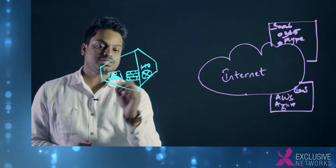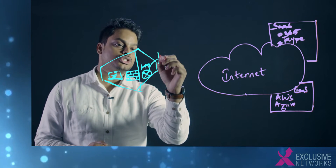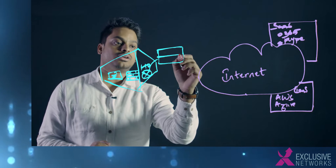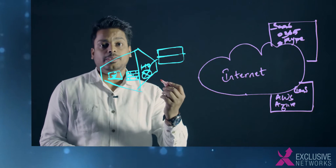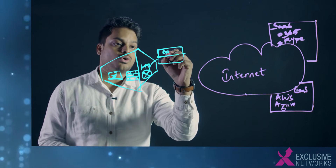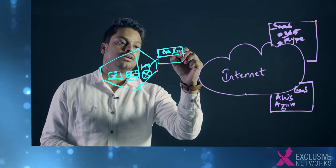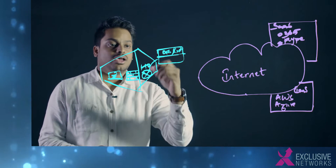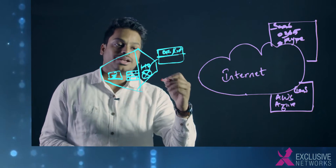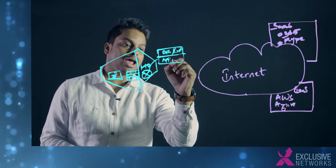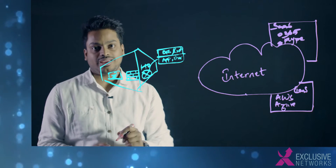Each one of these technologies has its own control plane and its own data plane. The control plane typically makes decisions like quality of service and routing decisions. However, the data plane is the part of the network which carries the actual application and user data.